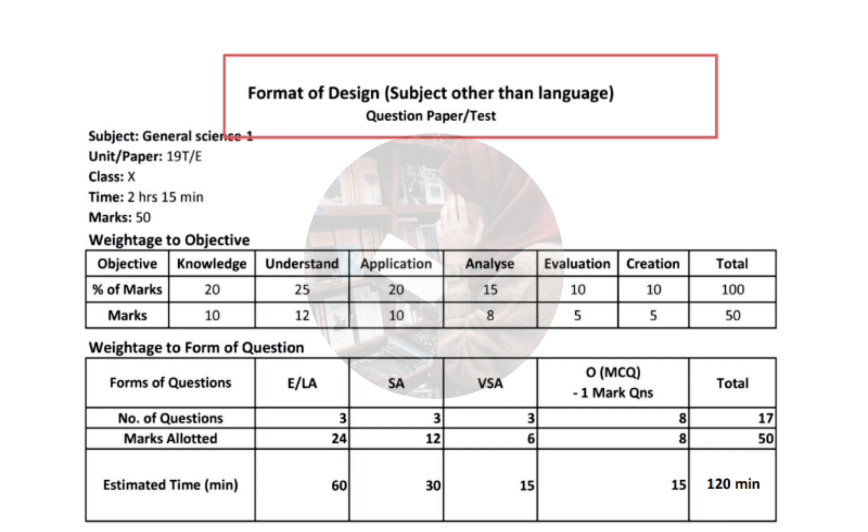Now we are going to see the general science model paper, which means the general science format or blueprint of general science. The question paper code will be 19T or E.